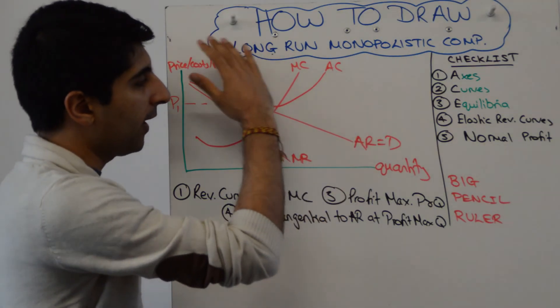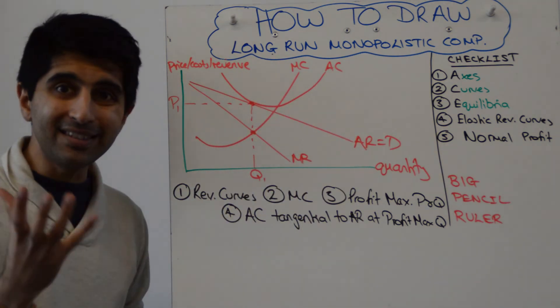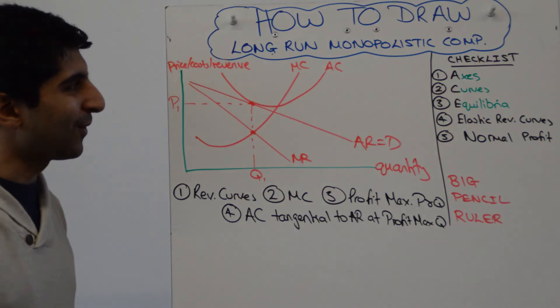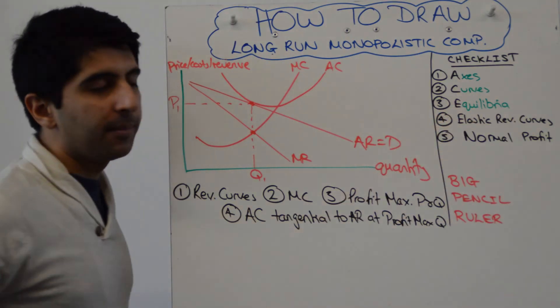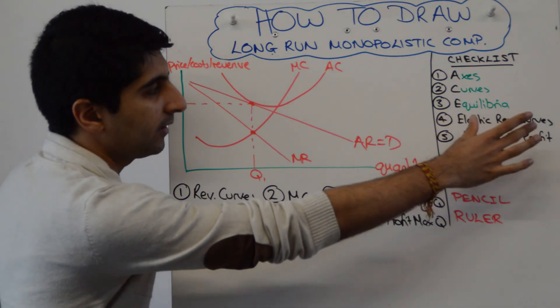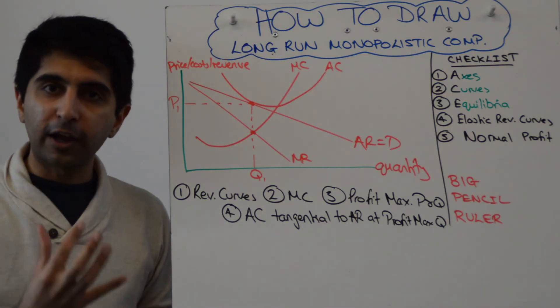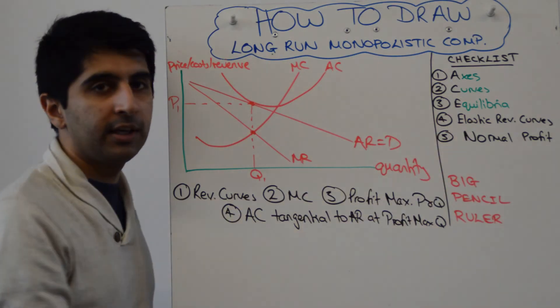Now we go to our checklist. How we label our axes? Yes we have. Have we labeled all of our curves? Yes we have—easy to forget doing one of those, make sure you do. Have you labeled the equilibrium? Yes we have. The elastic revenue curves have been done. Normal profit has been shown nice and clearly. The diagram has been aced and all the key things that we need to have shown have been shown.